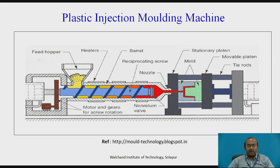Now let us see the molding machine used for plastic injection. You can observe the particular setup. The schematic diagram shows the reciprocating screw, covered with the barrel and heaters. The gap between the screw and barrel is accommodated by plastic raw material fed in granular or powder form through the feed hopper. At the end of the barrel, a nozzle is provided, connected to the mold section. The mold is divided into two parts — one fixed mold and another connected to the movable platen, which can be moved with tie rods.